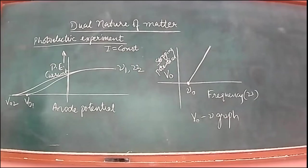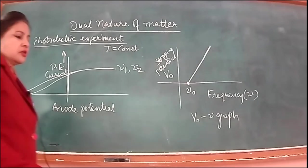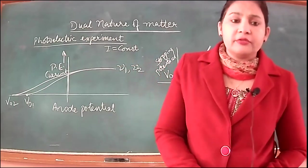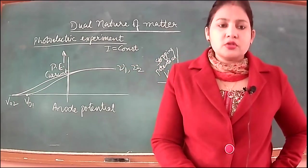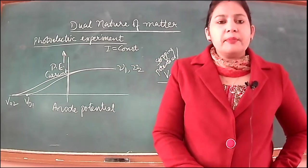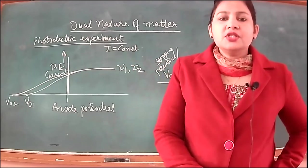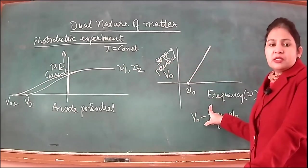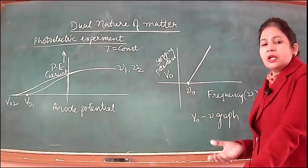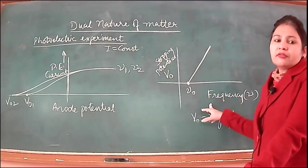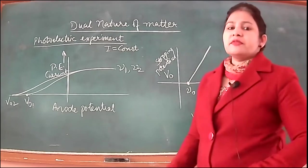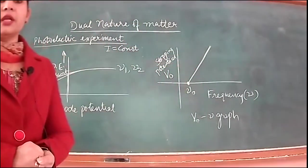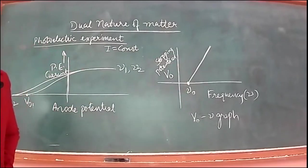This was the next very important observation. From here we can relate stopping potential and kinetic energy of electrons, because stopping potential is the reverse value of anode potential that stops the most energetic electrons from reaching the anode. So maximum kinetic energy of emitted photoelectrons also depends upon frequency of radiation, not intensity of radiation.